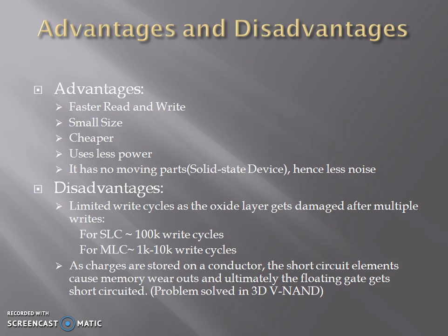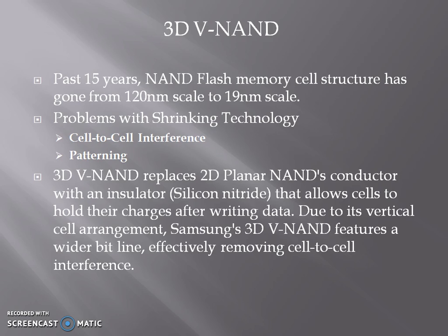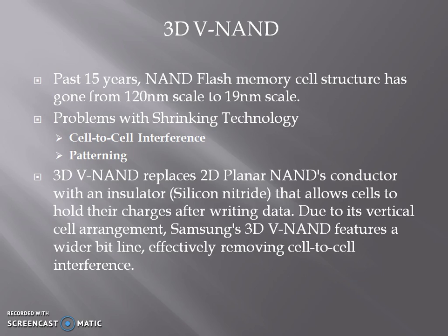This disadvantage is overcome using 3D vertical NAND. The planar NAND has undergone shrinking from 120nm to 19nm. As we undergo more shrinking, two problems occur: cell-to-cell interference and patterning. When charge flows in one cell, due to the coupling effect, some charge also flows in the neighboring cell and changes the stored data — that is cell-to-cell interference. Patterning is a manufacturing technology developed for photolithography to enhance density, and it also has a limit as we shrink. To overcome these problems, 3D vertical NAND was developed. It uses a charge-trap flash architecture instead of a floating gate, using an insulator to store the charges instead of a conductor.